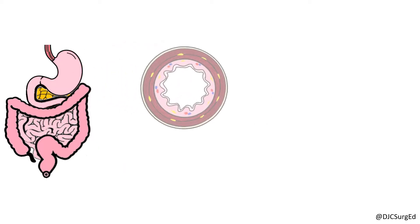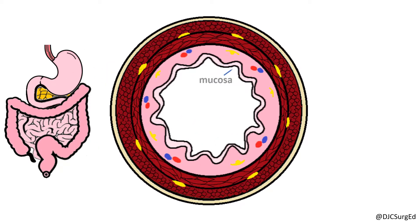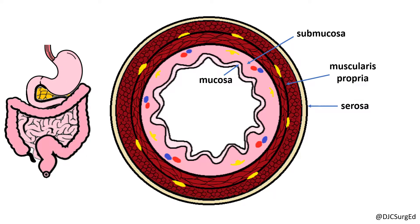The small bowel wall consists of four layers: an inner mucosa, submucosa, muscularis propria, and an outer serosa. By understanding the microscopic anatomy of these layers, we will know all the types of tumors, both benign and malignant, that can arise from the small intestine.